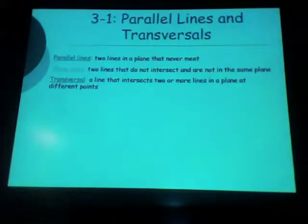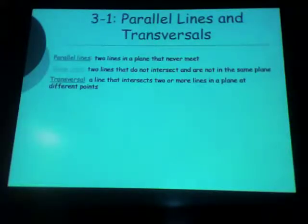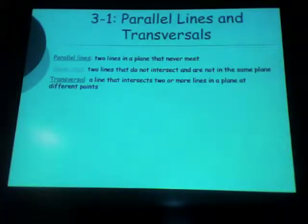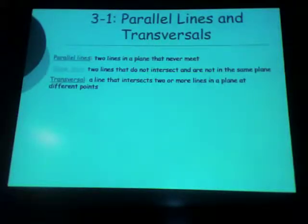A transversal is just a line that intersects two or more lines. It has to intersect at least two lines or more in a plane at different points. The transversal will be in the same plane as the lines that it is intersecting. That diagonal line in your notes is the transversal. The two horizontal lines are your parallel lines.